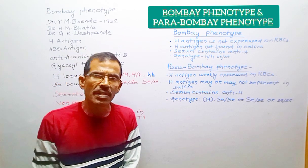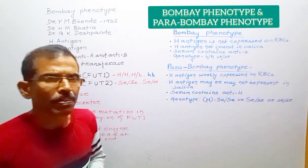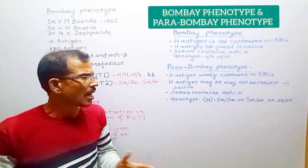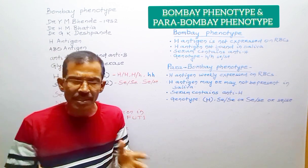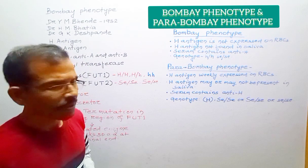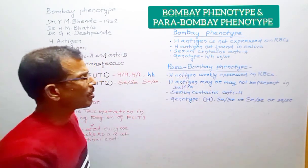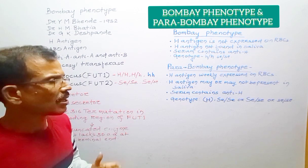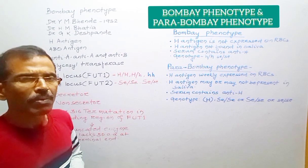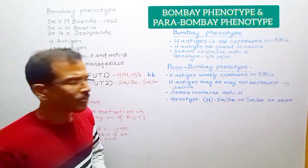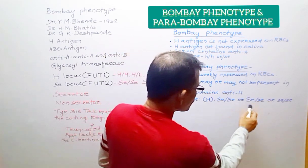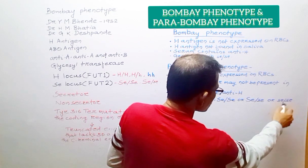Some important characteristics of Bombay phenotype and Parabombay phenotype: In Bombay phenotype, H antigen is not expressed on red blood cells, is not formed in saliva, the serum contains anti-H antibody, and the genotype is h/h, se/se. Regarding Parabombay phenotype, H antigen is weakly expressed on red blood cells, H antigen in saliva may or may not be present, the serum contains anti-H antibody, and the genotype can be h/h with Se/Se, Se/se, or se/se.